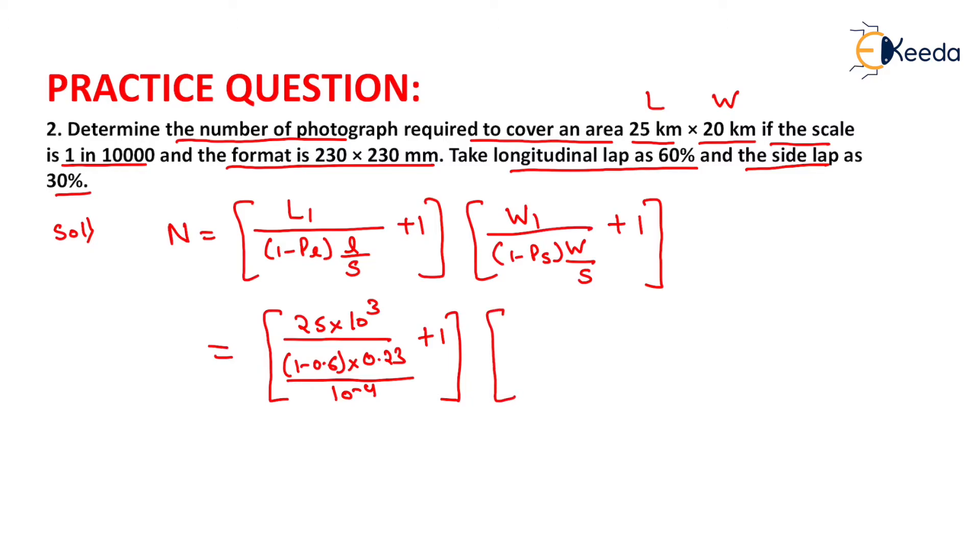Similarly, the value of W1 will be equals to 20 kilometers. So it will be equals 20 into 10 to the power 3 upon 1 minus 0.3 into width of photograph is equals to 0.23, 10 to the power 3 upon 10 to the power minus 4 plus 1.